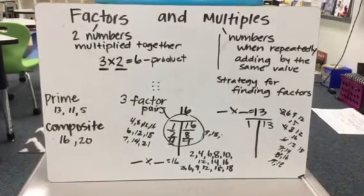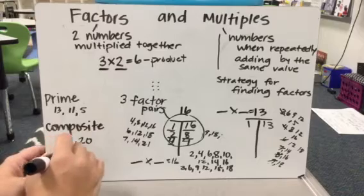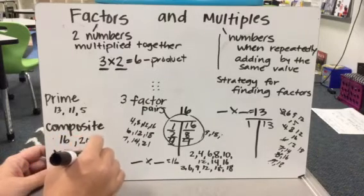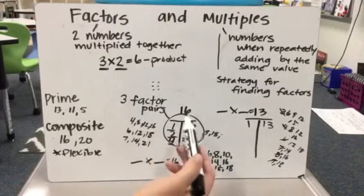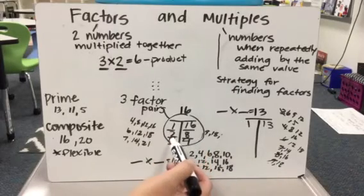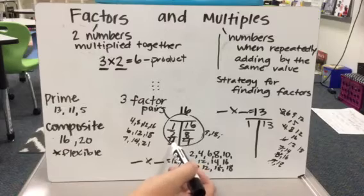you know that you can be flexible with them. So composite numbers are flexible because you know that you have lots of ways to use them. I could have 16 chairs and I could put them into two groups of eight or I could put them into four groups of four.